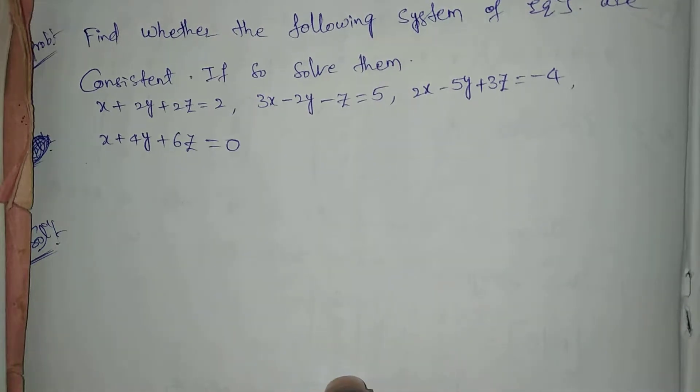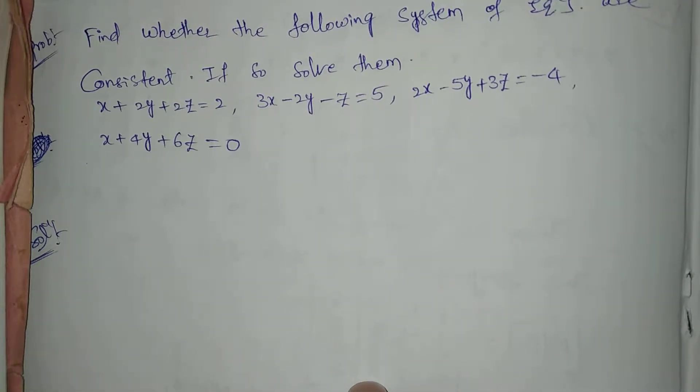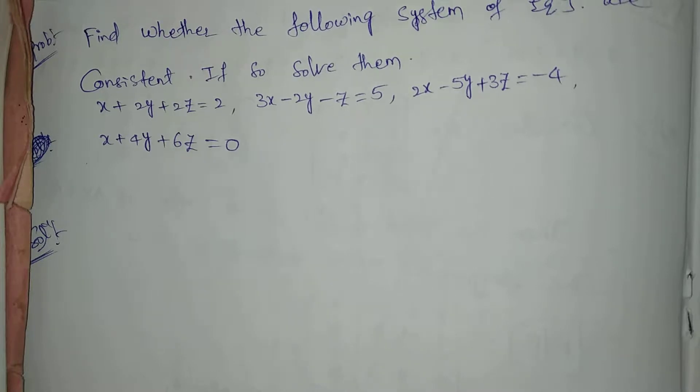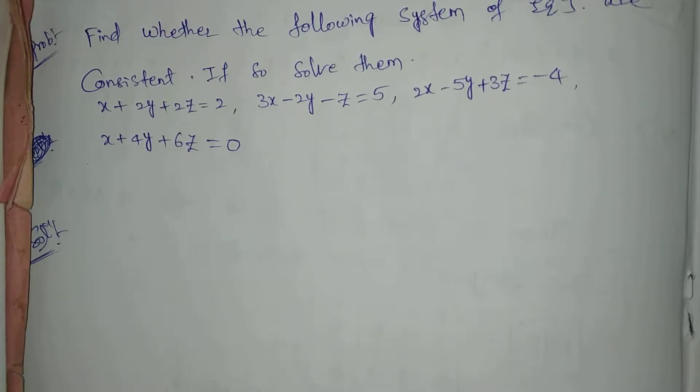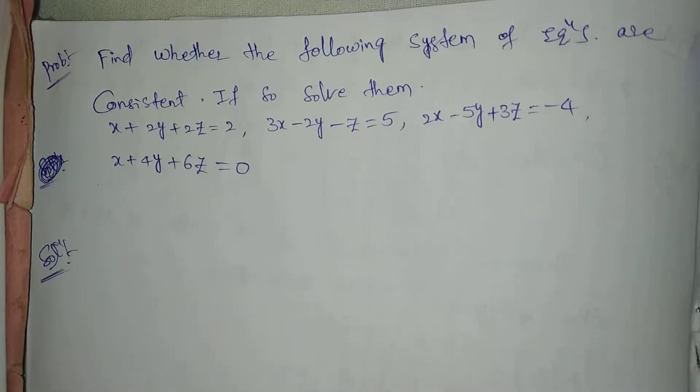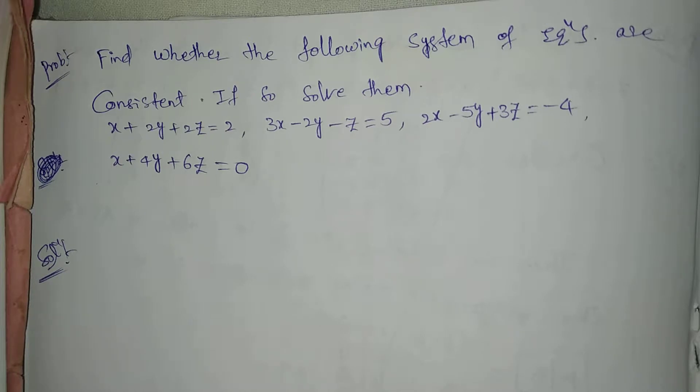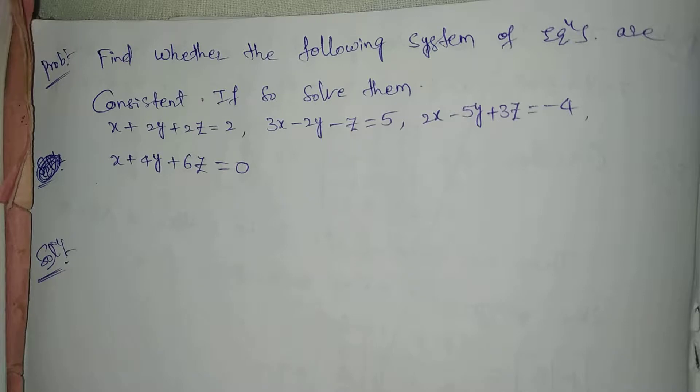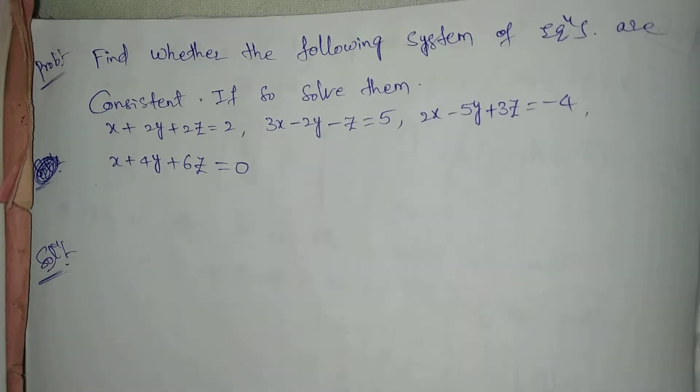Now, what is consistence? Consistence exist if x, y, z values exist, then we will be consistent. That exists when rank A equal to rank A given B. And if it is equal, then x, y, z values exist. Consistence has a unique solution. Right?